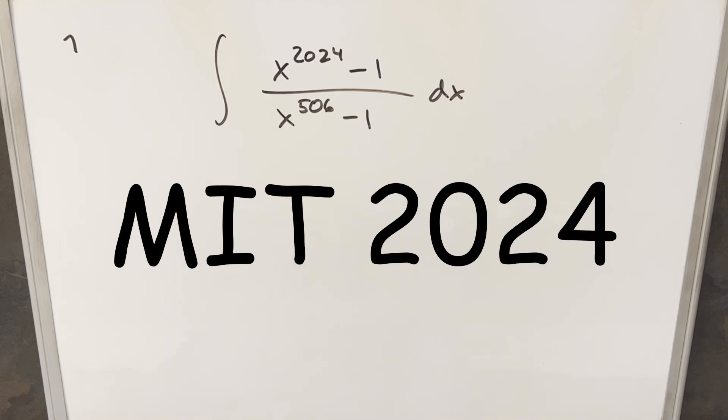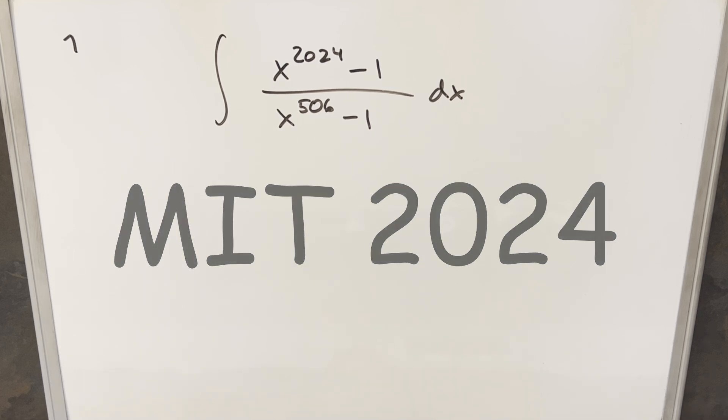Okay, we have here another integral from the MIT integration bee from 2024, problem 7. We have the integral of x to the 2024 minus 1 over x to the 506 minus 1 dx.